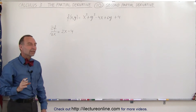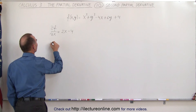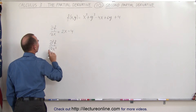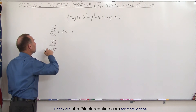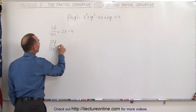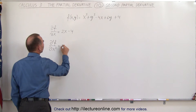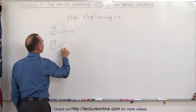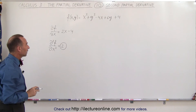Now we're going to take the partial derivative of this again — that's called the second partial derivative. So the second partial derivative of the function with respect to x is written like this, just like with regular derivatives, except we have these skewed d's instead of the regular d's. The derivative of 2x with respect to x is simply 2, and the derivative of a constant is equal to 0. So this is the second partial derivative of the function with respect to x.